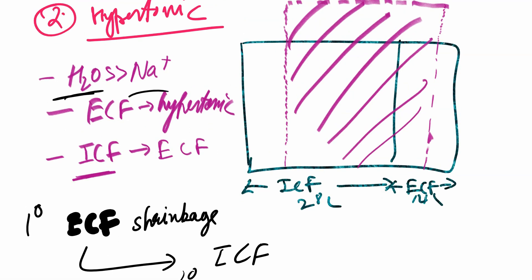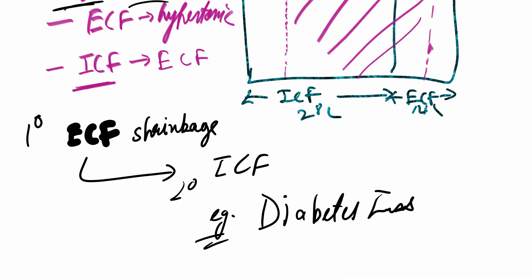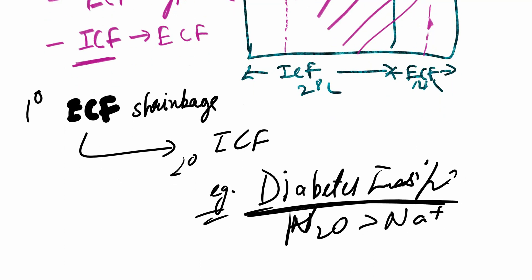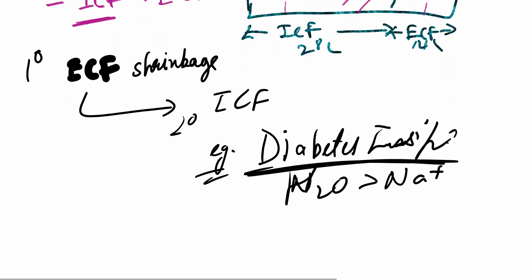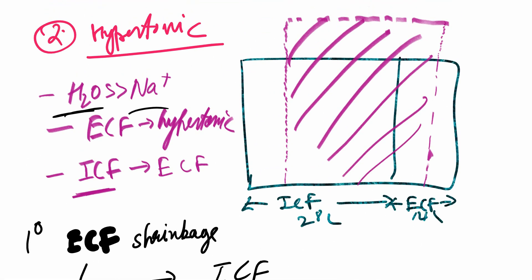Examples of hypertonic dehydration: the most important is diabetes insipidus, because there is more water loss from the collecting duct in the kidney than sodium. Diabetes mellitus to some extent can also cause hypertonic dehydration.